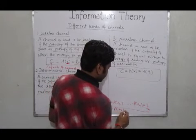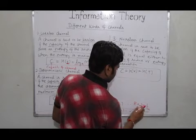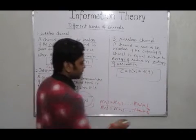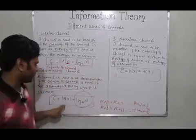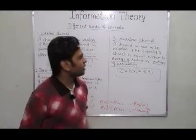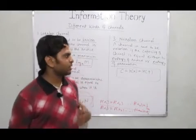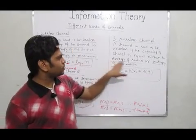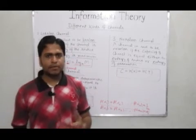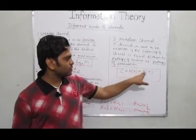When the events are occurring with the same probability, we always obtain the maximum entropy. When we come to the noiseless channel, a channel is noiseless if the capacity of the channel becomes equal to either the entropy of the source or the entropy of the destination. This is formulated as C = H(X) or C = H(Y).